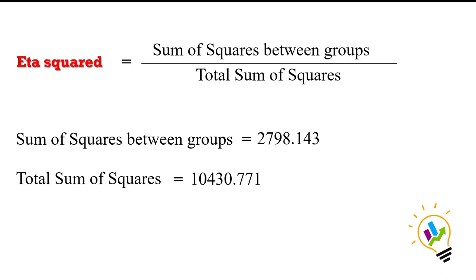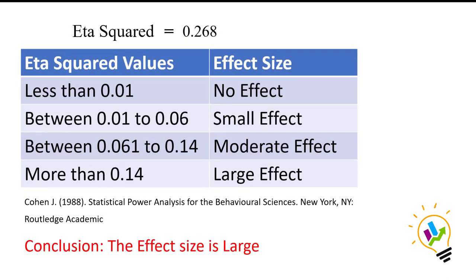Substituting the values: sum of squares between groups is 2798.143 and total sum of squares is 10430.771. This gives us an eta squared value of 0.268.